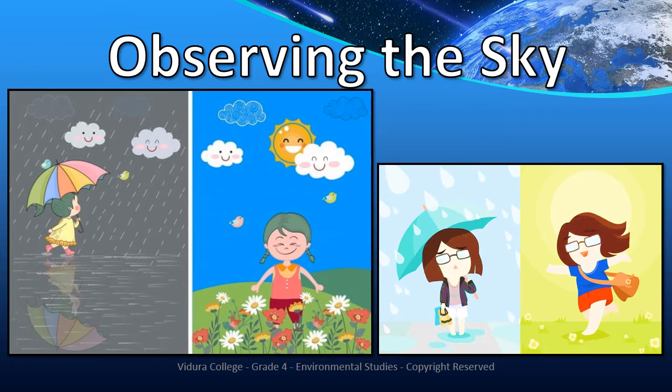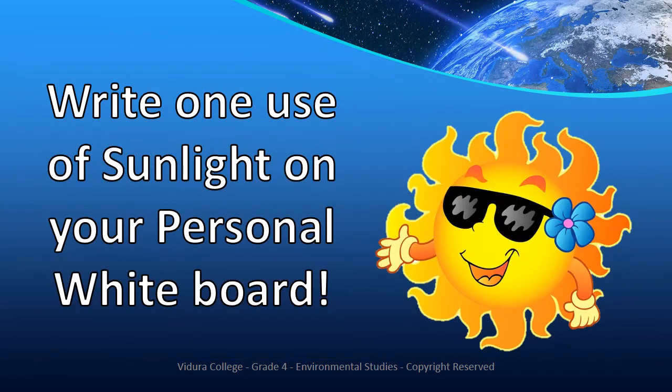On a gloomy rainy day, the sun is covered with clouds, there are no birds or butterflies in the air, the sky is covered with dark clouds, and the wind blows faster. So which one do you prefer — a bright sunny day or a gloomy rainy day? Pause the video and write one use of sunlight that you know.